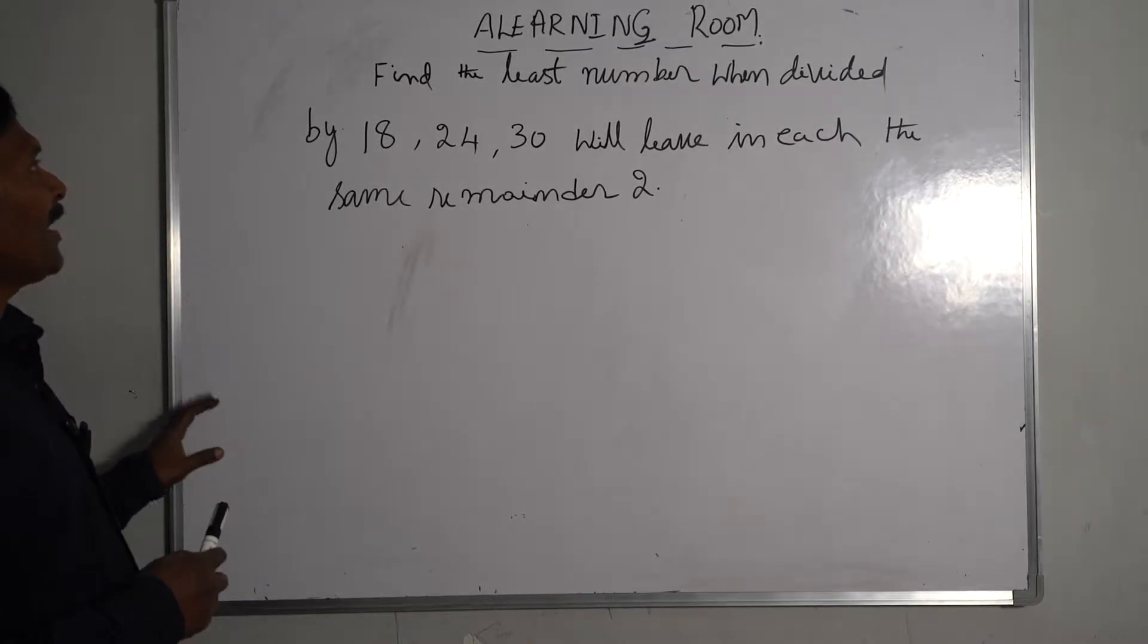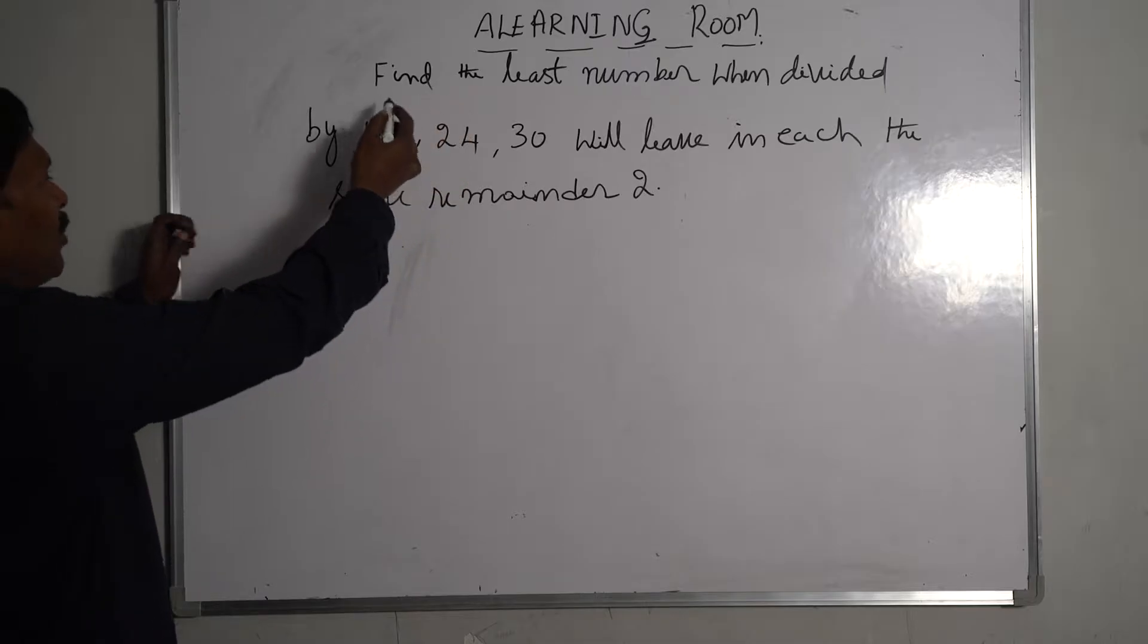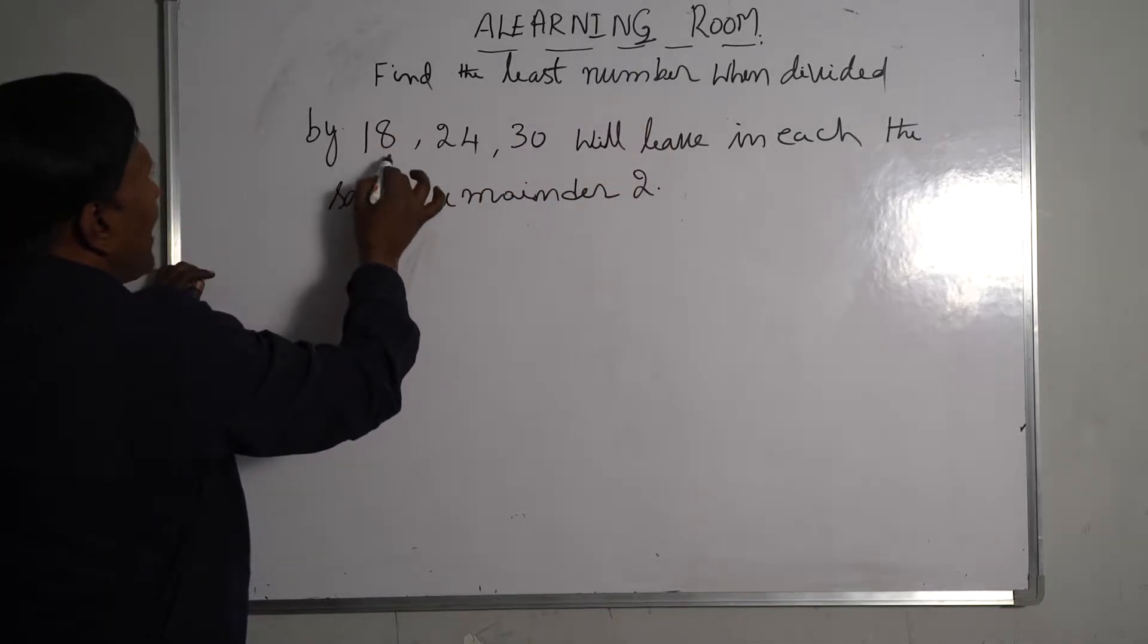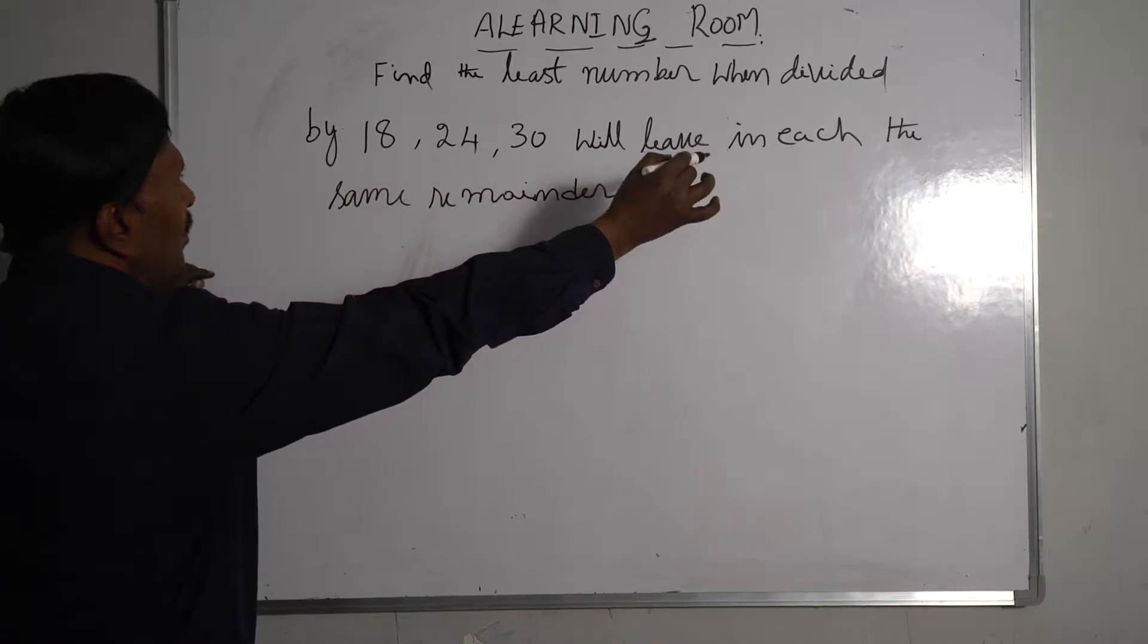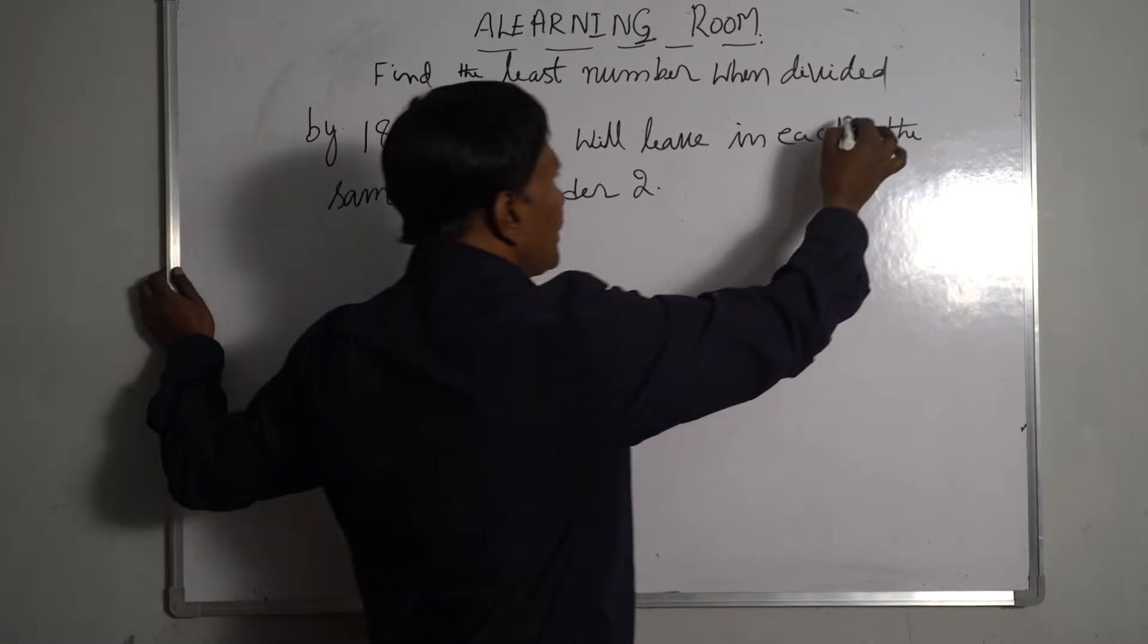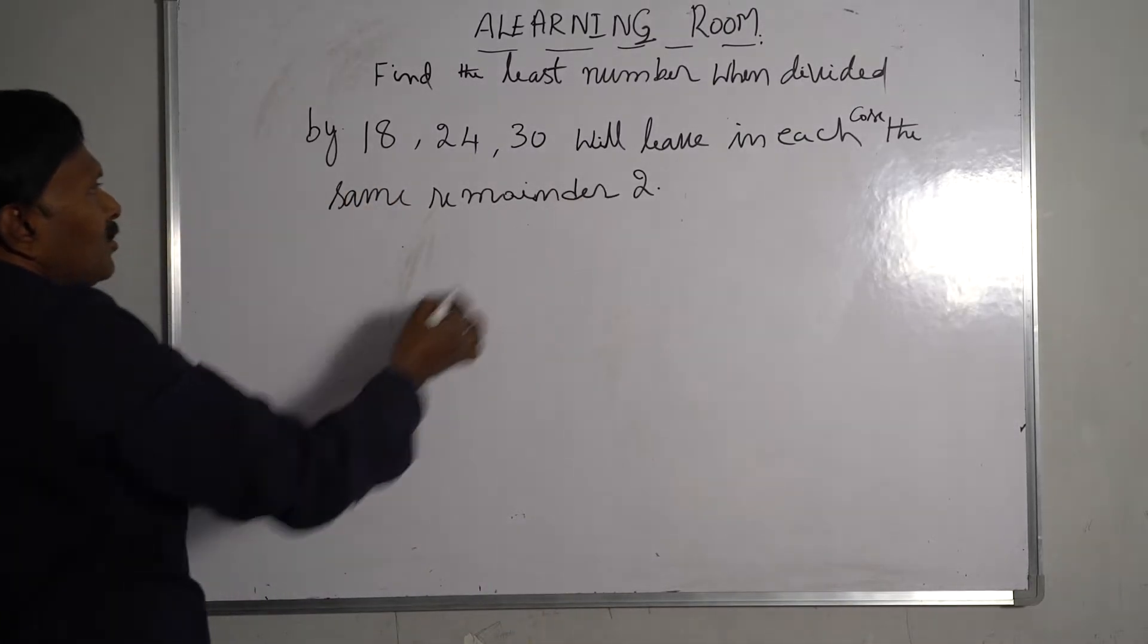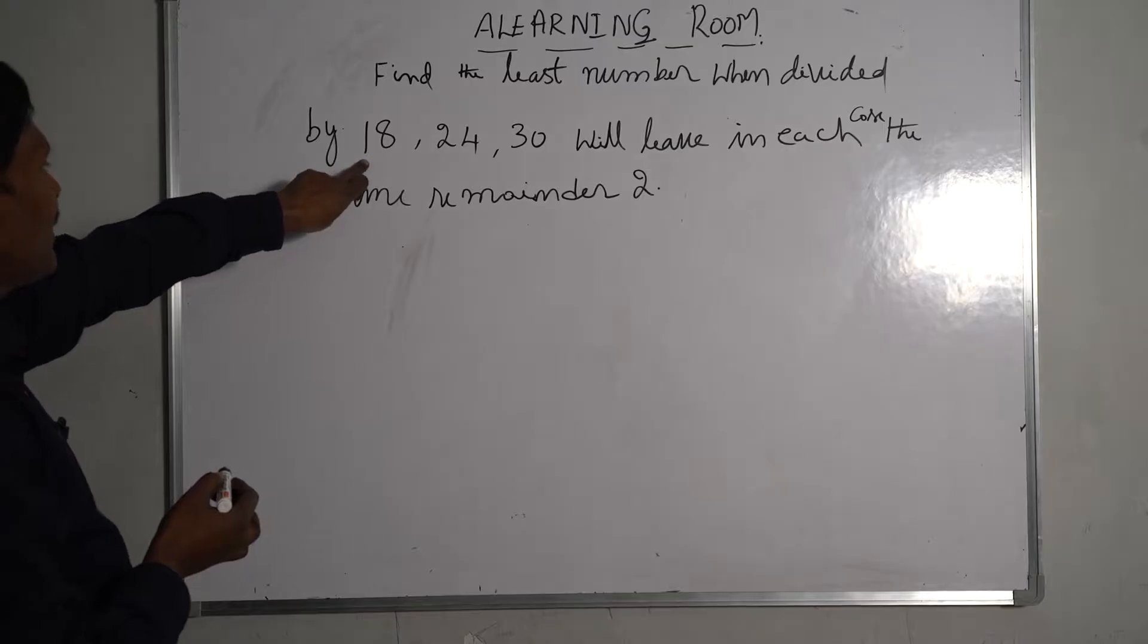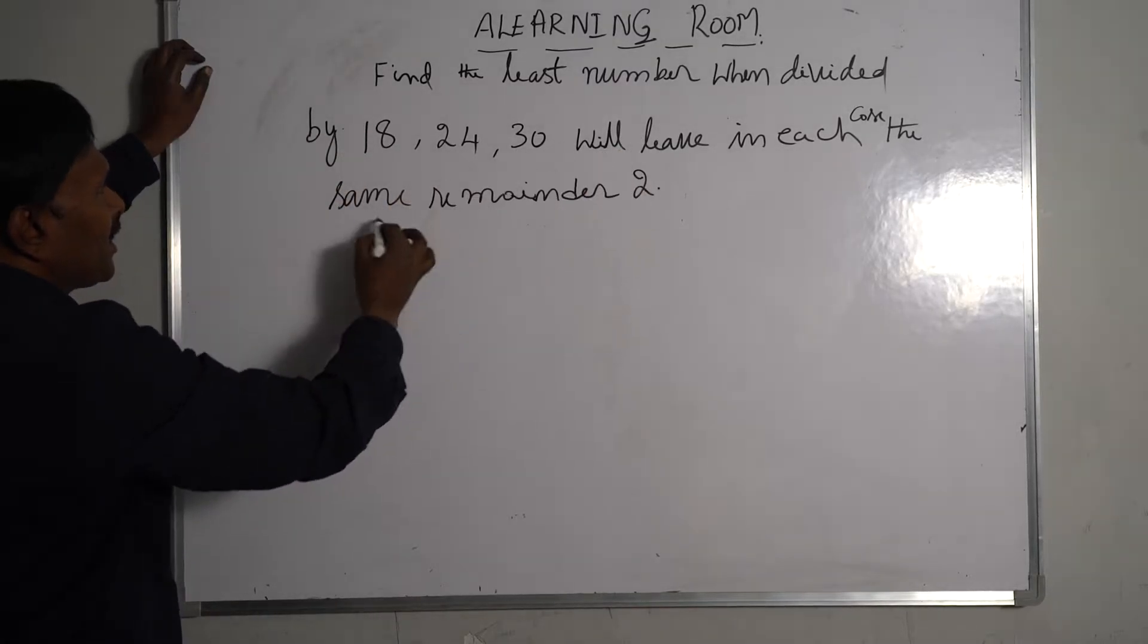Hi, welcome to A Learning Room. We will see the problem: find the least number when divided by 18, 24, 30 will leave in each case the same remainder 2.